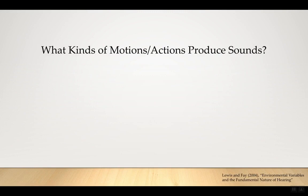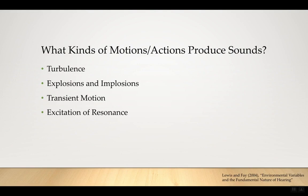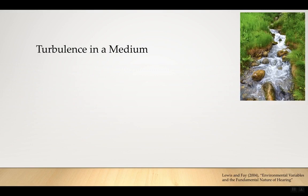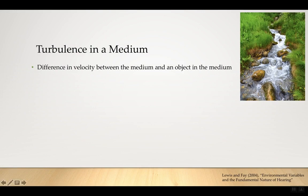Let's look more in depth at what kinds of motions or actions produce sounds. Since hearing is making sense of motion, we can look at what kind of motion produces the sounds we hear. There are four main categories: turbulence, explosions and implosions, transient motion, and excitation of resonance. It turns out all these things are applicable both for human speech and also for music.